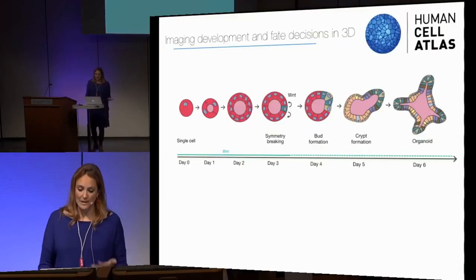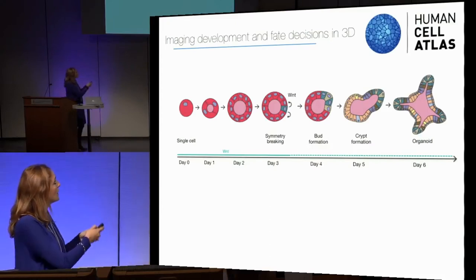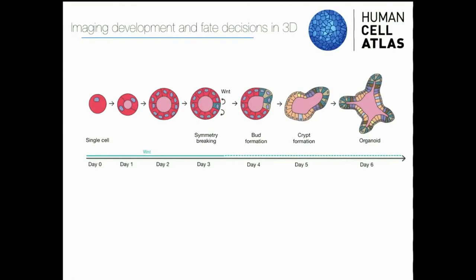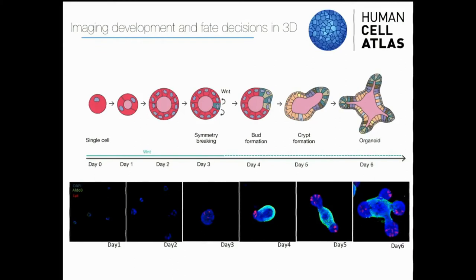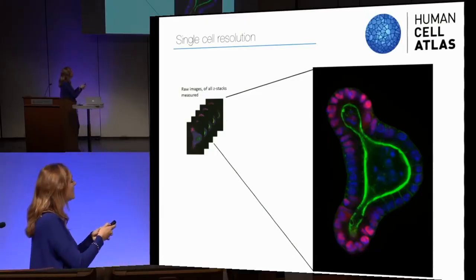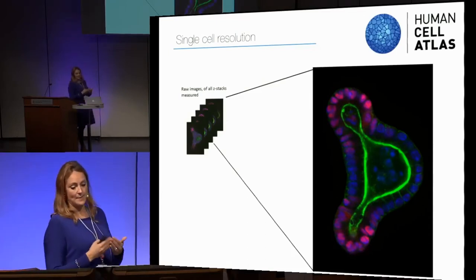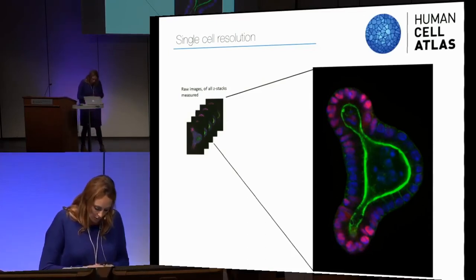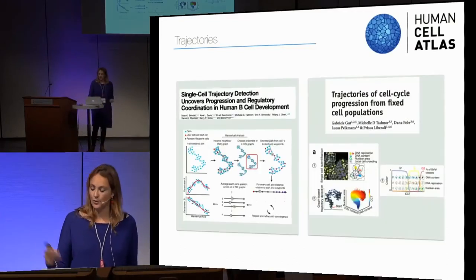We can also work in 3D. This is mainly what we are doing now in the lab — we work with organoids, look at their formation, and can really achieve single-cell resolution over different days and for different proteins. You can see here we can follow the formation of an organoid over six days, acquiring hundreds of thousands of organoids and looking at variation between organoids or between cells within the same organoid. We can segment all these cells and extract morphological and molecular features.